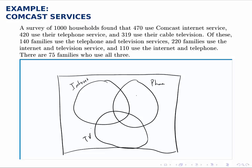We're given a bunch of numbers but these are all overlapping with one another. We always start with the innermost intersection. There are 75 families who use all three, so we put 75 in the innermost intersection.